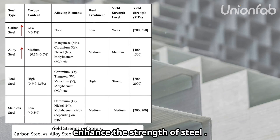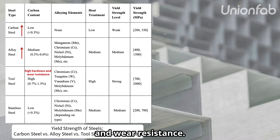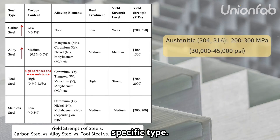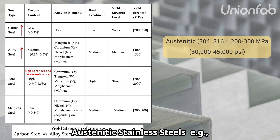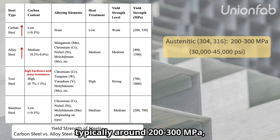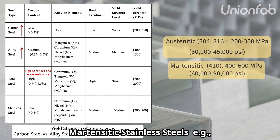Tool steel prioritizes high hardness and wear resistance. For stainless steel, yield strength varies based on the specific type. Austenitic stainless steels — for example, 304 and 316 — offer good corrosion resistance but have a moderate yield strength, typically around 200 to 300 megapascals (30,000–45,000 psi).